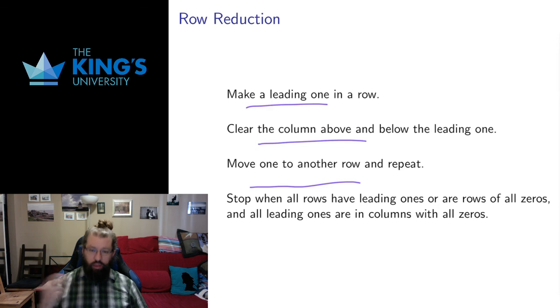So this algorithm, make a leading 1, clear the column, make a leading 1, clear the column, is going to produce this reduced row echelon form, and it only uses the row operations of multiply a row by a constant, add one row to another, and exchange the rows.